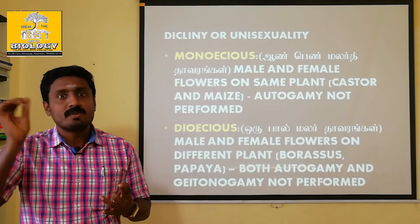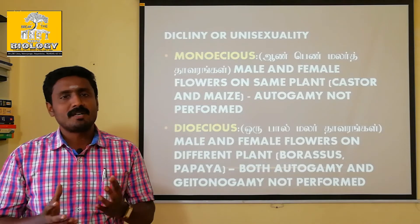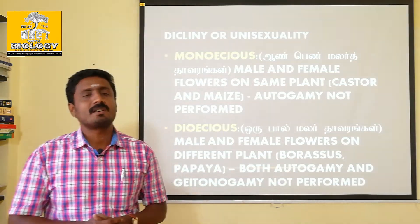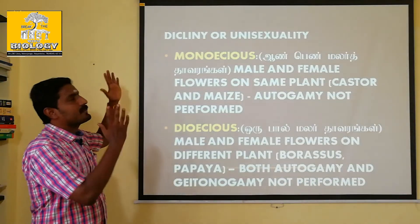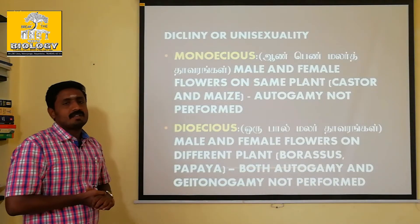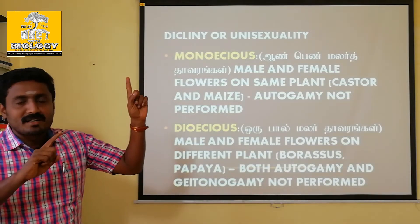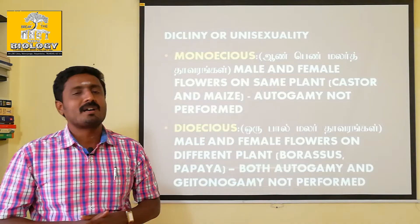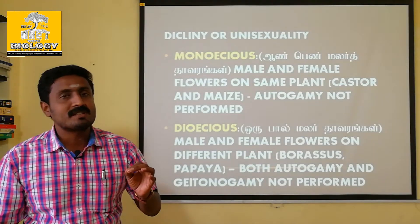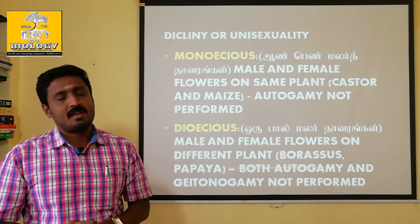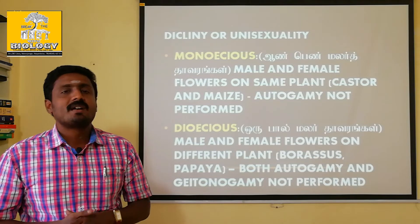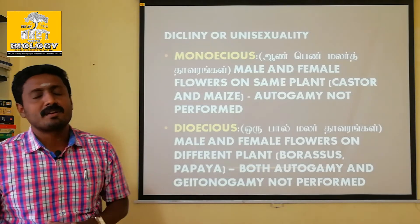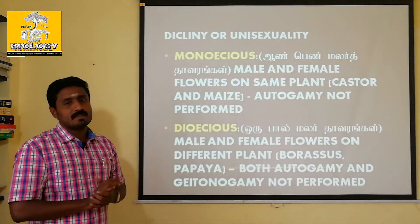That is unisexual flower. Now we will go to this definition. One bisexual flower is one where androcium and gynoecium are both present in the same flower. One unisexual flower is one where either androcium or gynoecium is present in the flower. That is the unisexual flower.